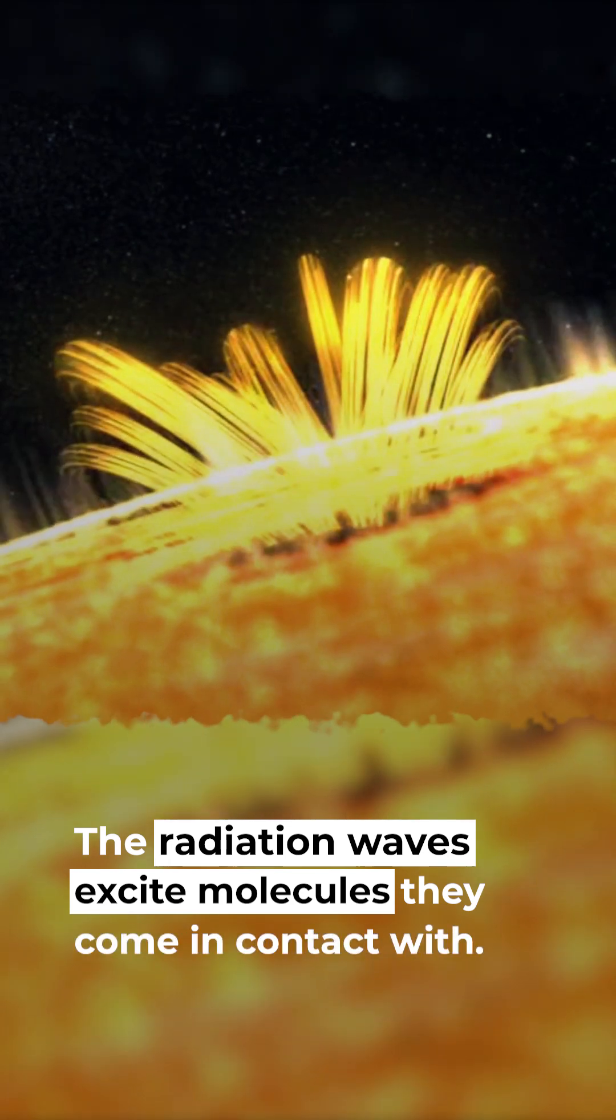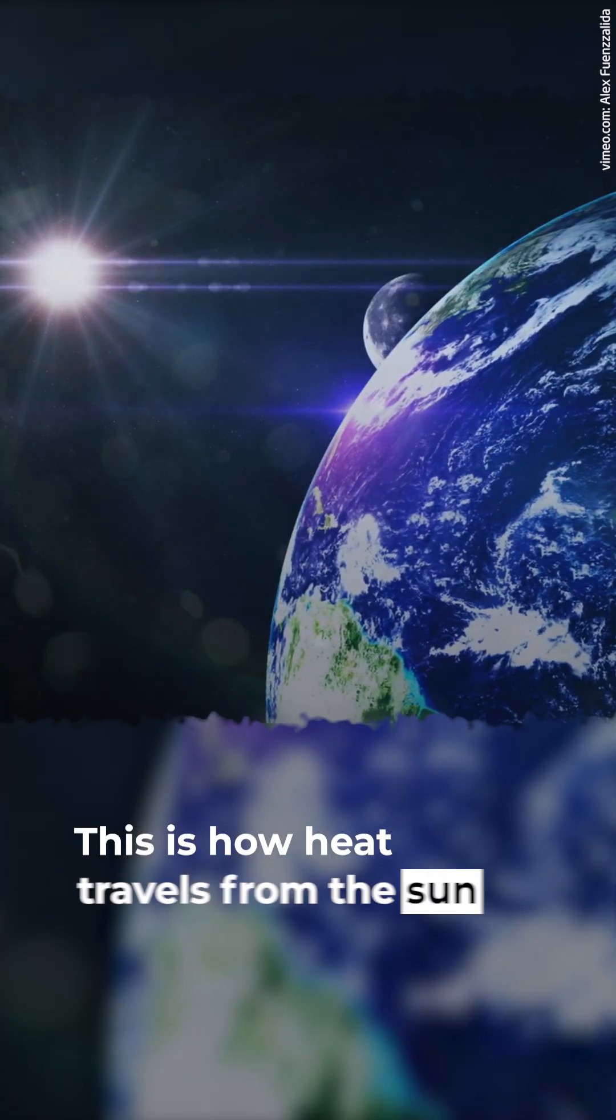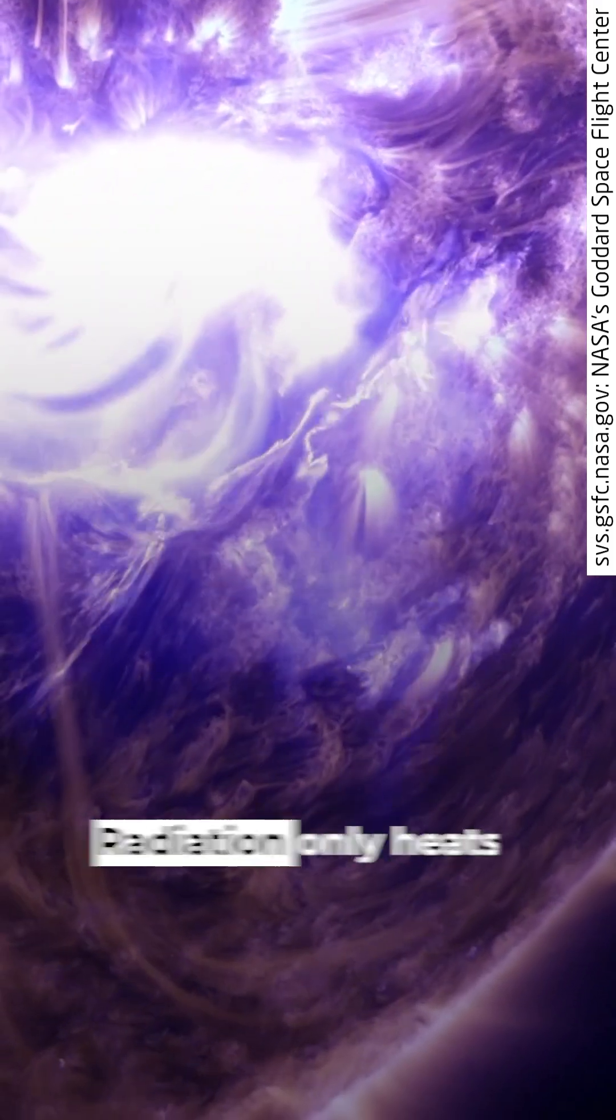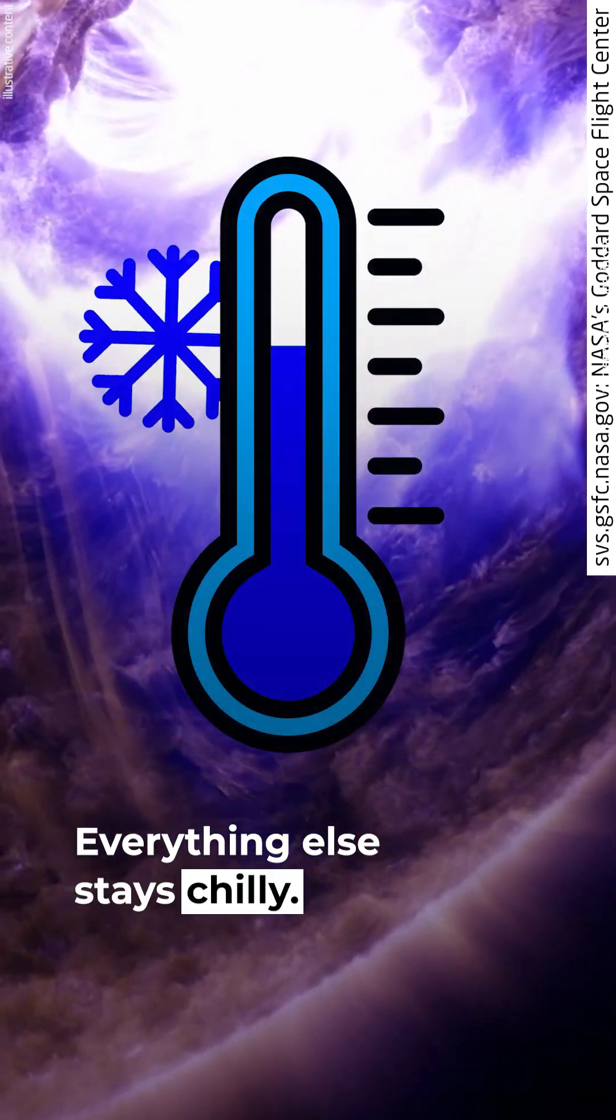The radiation waves excite molecules they come in contact with. This causes them to heat up. This is how heat travels from the sun to Earth. But there's a catch. Radiation only heats molecules that are directly in its path. Everything else stays chilly.